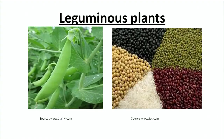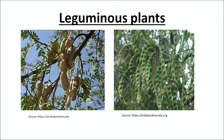Talking about leguminous plants, familiar examples include the pea plant, which is the best example of a legume, as well as pulses such as rajma, chana, groundnut, and all kinds of beans. These are examples of leguminous plants.